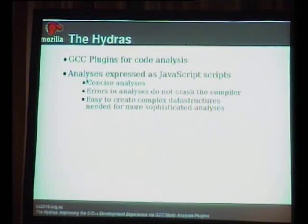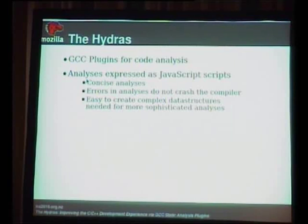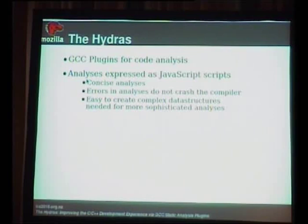I thought it was funny for a while, but then I realized it's actually an interesting way to do analysis. JavaScript is a language that sort of looks like C but also has a lot of the features of Lisp. You have garbage collection, easy-to-define data structures. You're not going to segfault your compiler from a mistake in your analysis. Your analysis is going to be a lot more concise — it's possible to write something in five lines of code which is usually not possible in C++. And because you have first-class functions, you can do recursive functions and all these nice things.